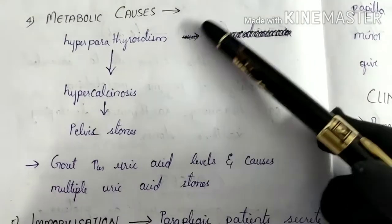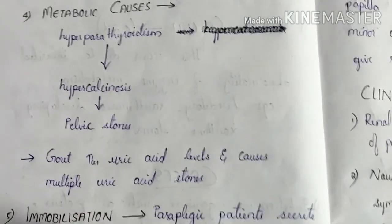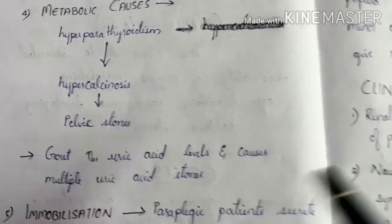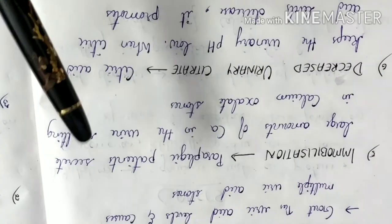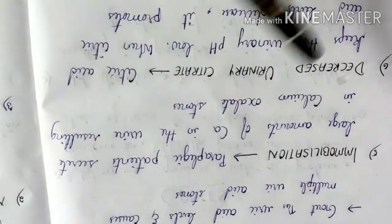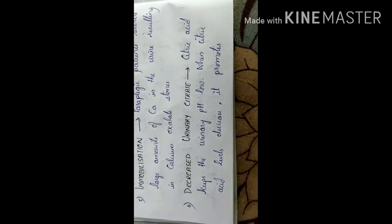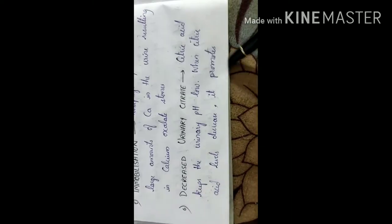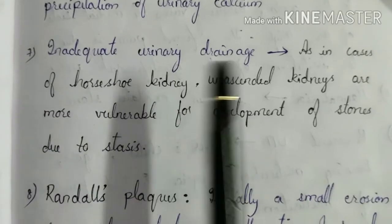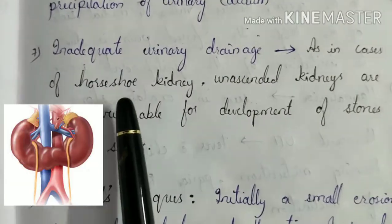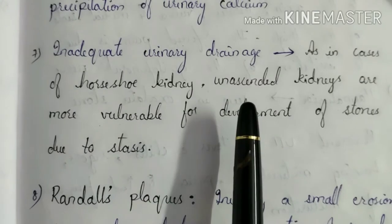Metabolic causes: hyperparathyroidism results in hypercalciuria, ultimately leading to renal stone formation. In gout, increased amounts of uric acid result in uric acid stones. Immobilization — for example in paraplegic patients — leads to large amounts of calcium being secreted in the urine, resulting in calcium oxalate stones. Decreased urinary citrate is also a cause, as citric acid is important to keep urinary pH low; when citric acid levels decrease, calcium stone formation results. Inadequate urinary drainage — occurring in horseshoe kidney or undescended kidneys — causes stasis of urine, ultimately resulting in stone formation.